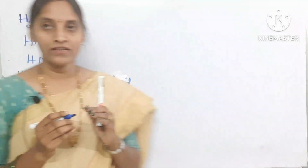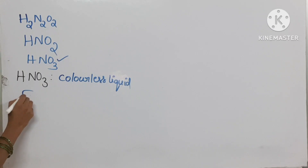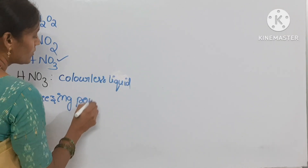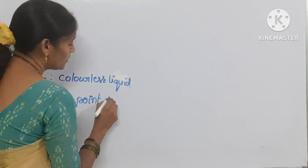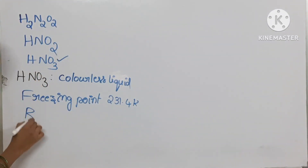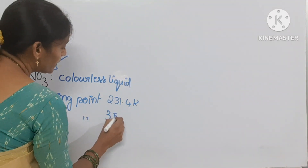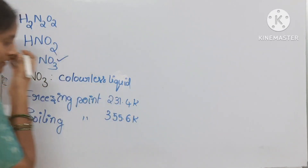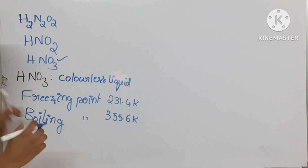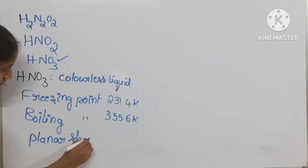It has a low boiling point and freezing point. The freezing point is 231.4 Kelvin and the boiling point is 355.6 Kelvin. It has a planar shape.